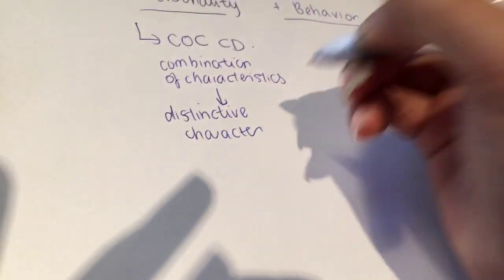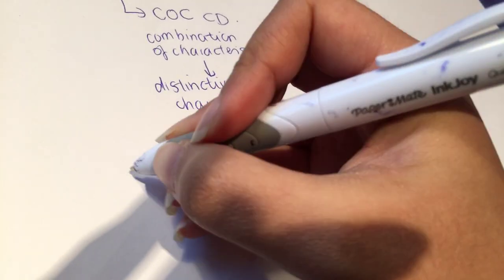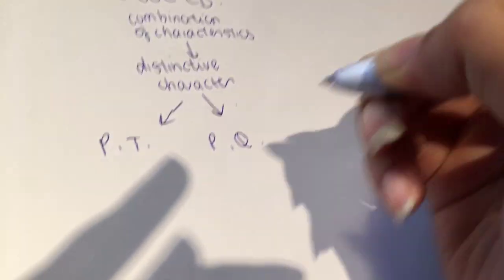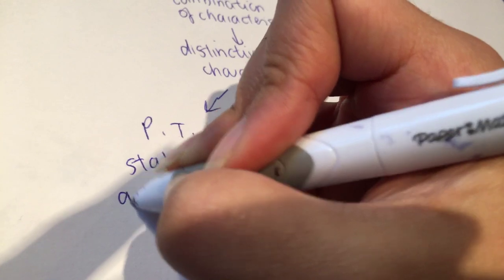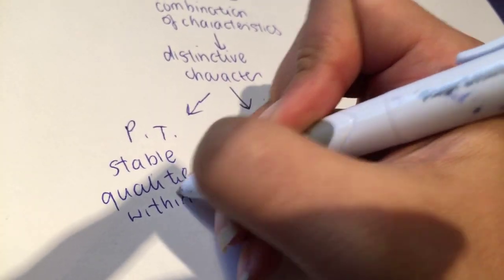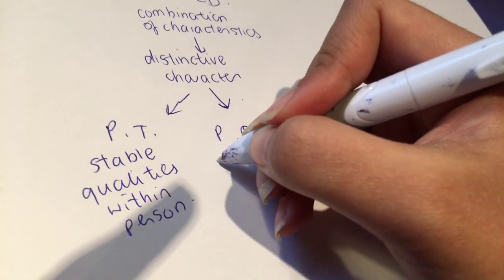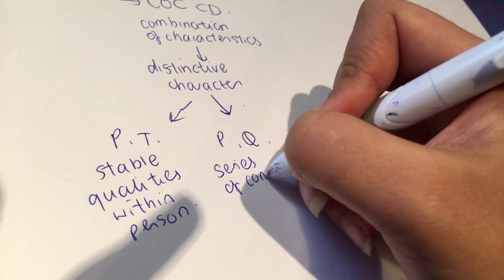And then personality traits and qualities are a little bit different, so you have to be aware of personality traits and personality qualities. Personality traits are stable qualities within a person, and stable means something that's consistent.